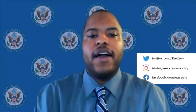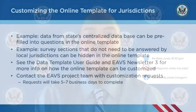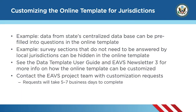The online template also allows state officials to customize parts of the template. For instance, if your state can answer some EAVS questions with data from your state's centralized database, the project team can pre-fill those responses into the online template. Or, if your local jurisdictions do not need to provide responses to one of the survey's sections, we can hide that section. Customization requests take between five and seven business days to complete. For more information on customizing the online template, see the third EAVS newsletter and the data template user guide, both of which are on the resources page of the EAVS portal.